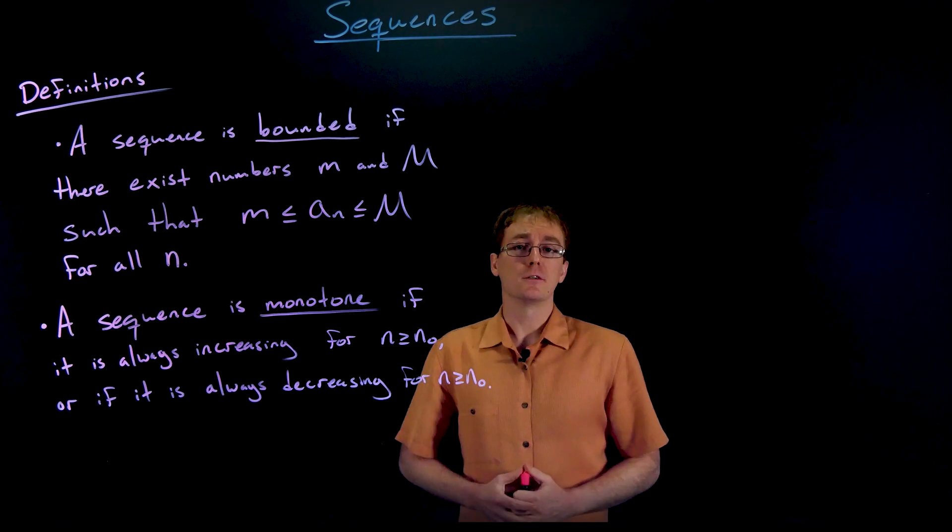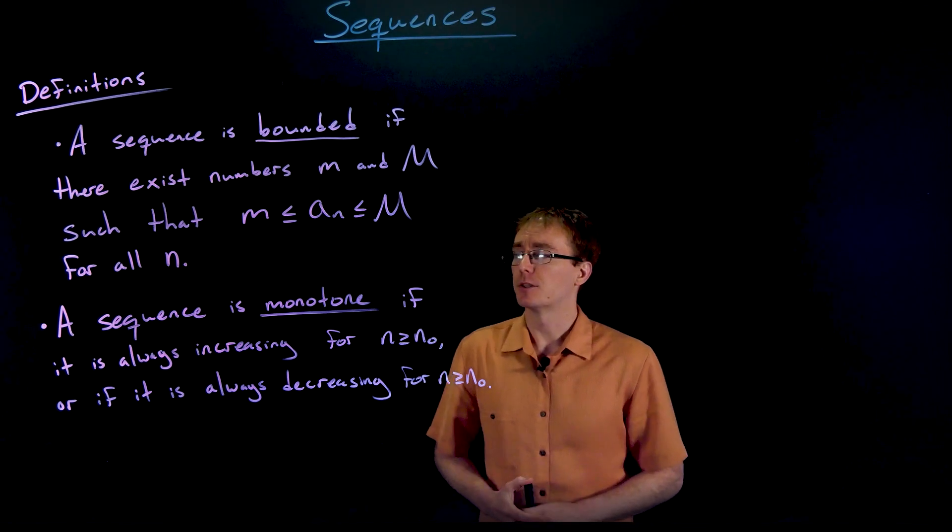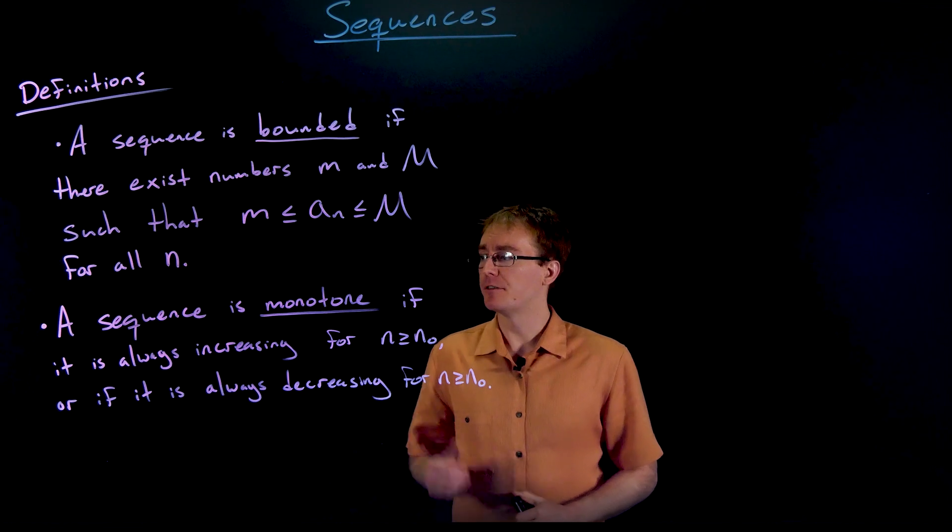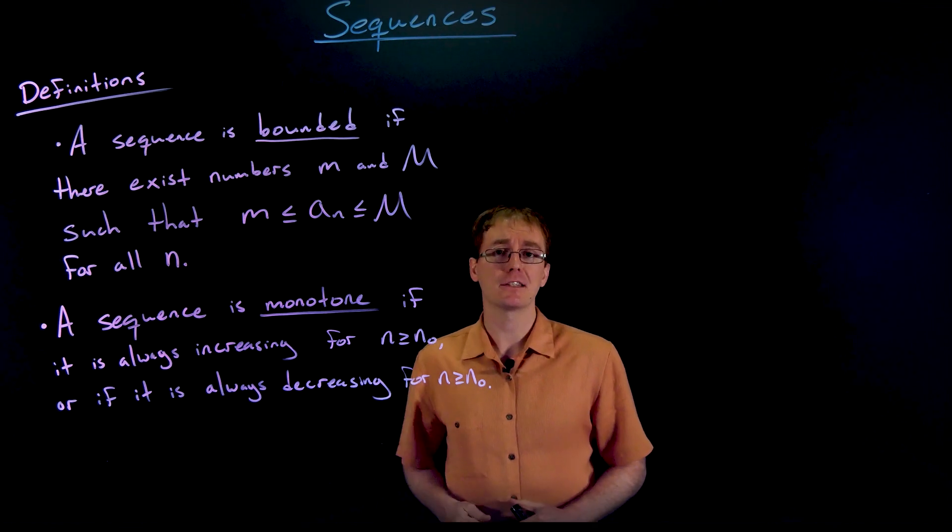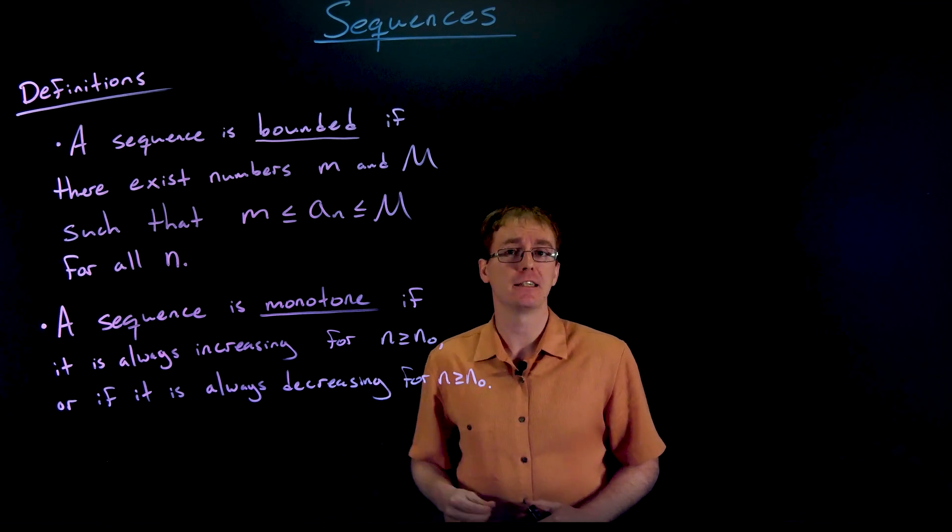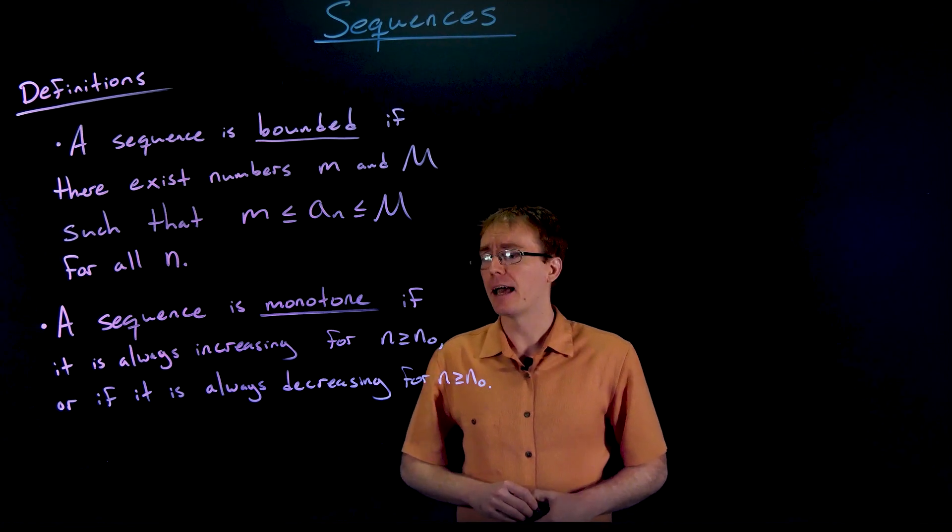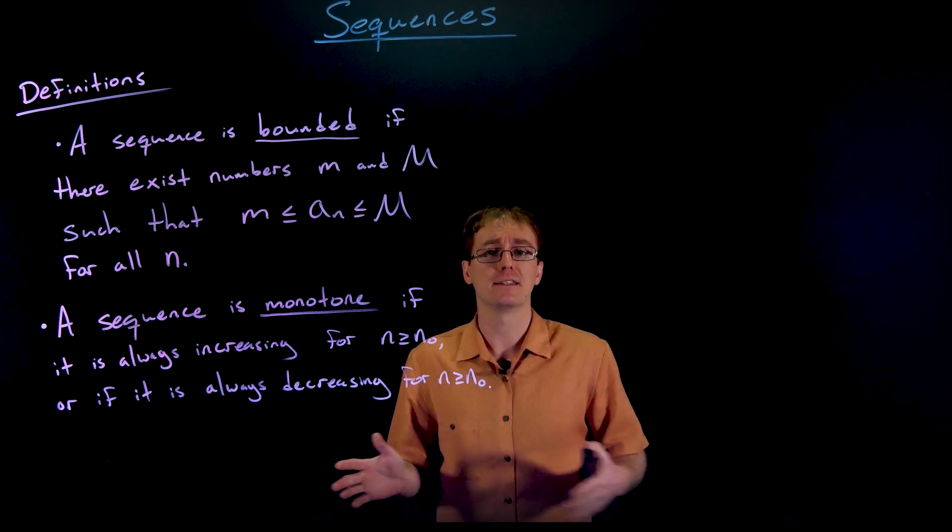Another important term or definition that we're going to need is what does it mean for a sequence to be monotone? We say a sequence is monotone if it is either always increasing past a certain point, or for some index value greater than some other given index value, like maybe after the fifth term, it's always increasing, or maybe after the fifth term, it's always decreasing.